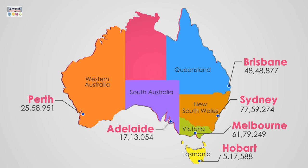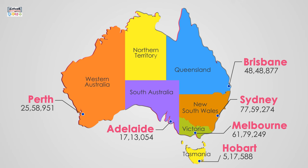And lastly, Northern Territory: the capital of Northern Territory is Darwin and the total population is 245,740.